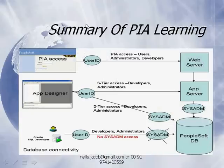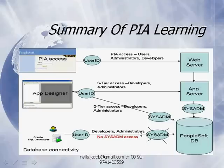To summarize what we have learned in PIA: when the PeopleSoft database is accessed through Oracle SQL Developer or Toad, this is similar to the two-tier architecture, because we have only two things — client and database. Developers don't have sysadm access available, but administrators can still have it. Administrators may access the PeopleSoft database through non-sysadm access.